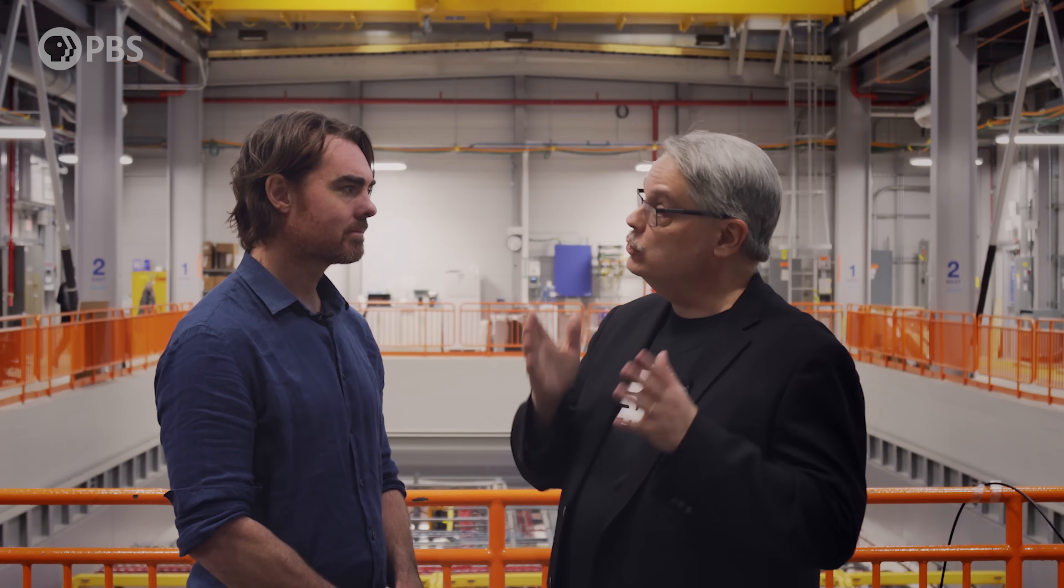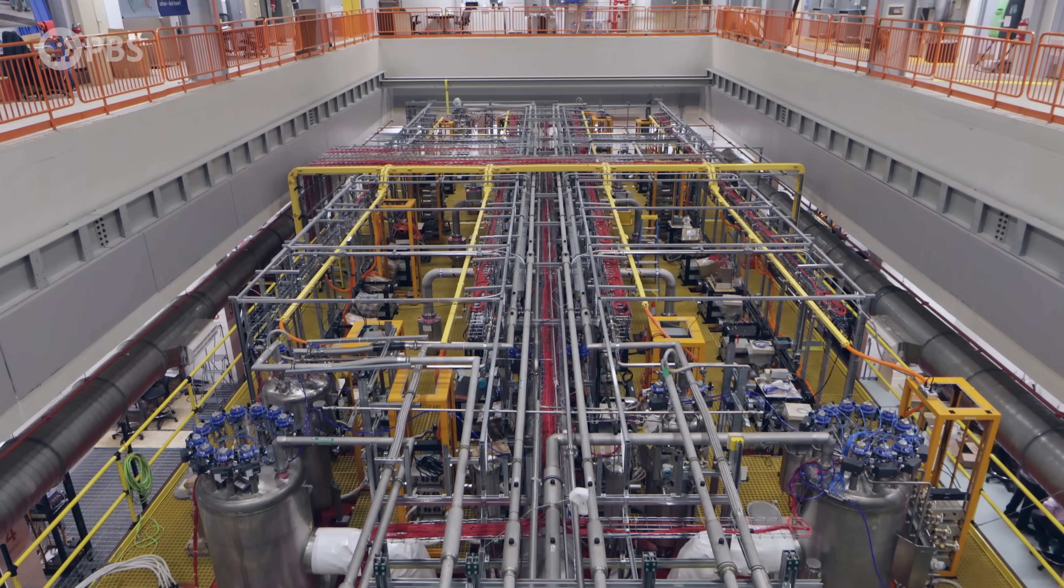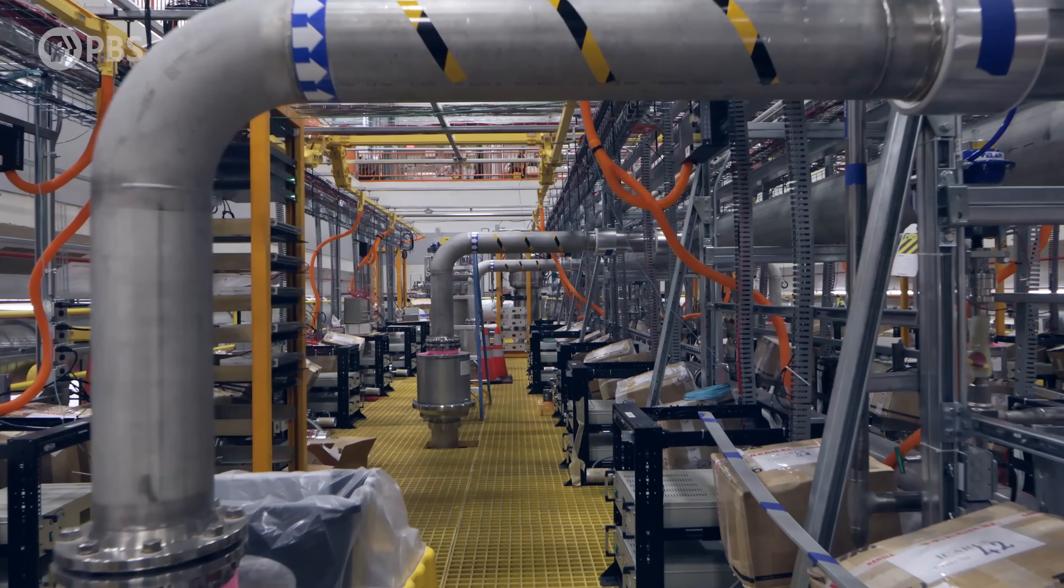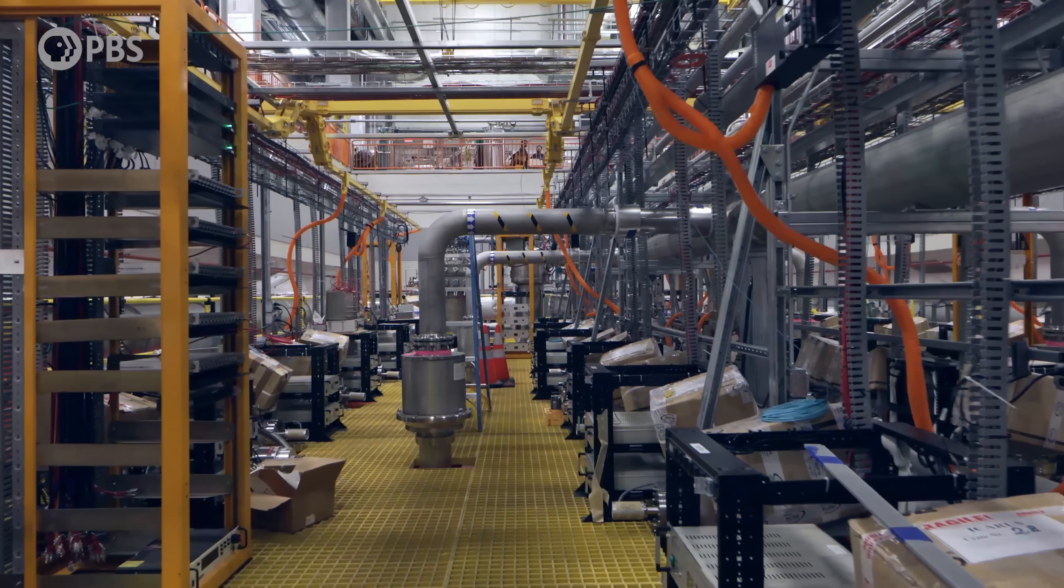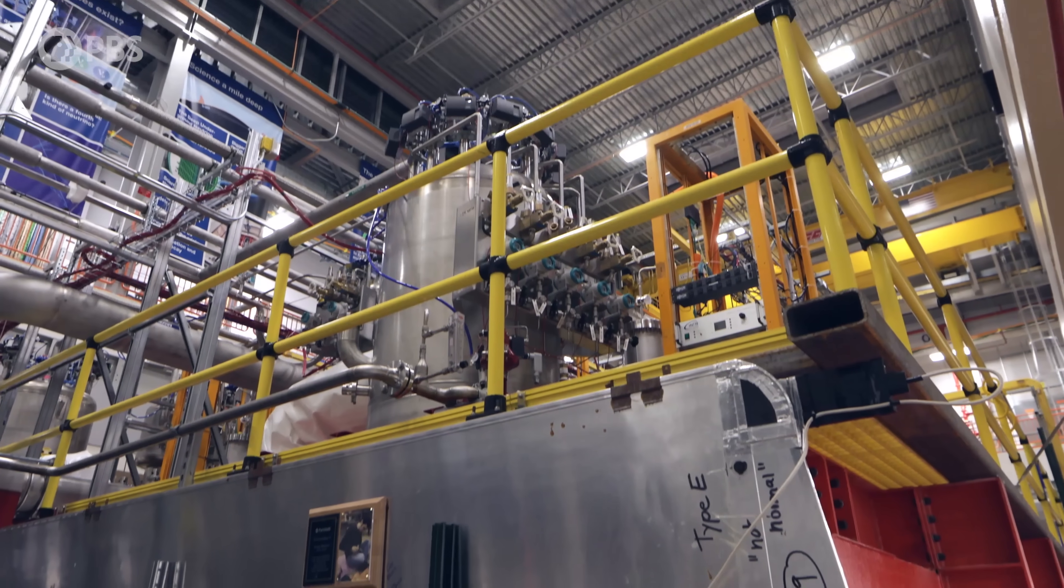Each neutrino has only a tiny possibility of interacting with any particular argon atom. So what we do is we shoot 10 trillion neutrinos per second through this detector, and only a handful of them actually interact. And so by doing that, we're able to understand what's going on.